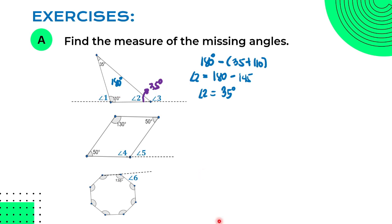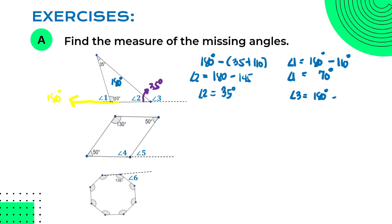Since interior and exterior angles are supplementary, given an interior angle we subtract from 180 degrees. Angle 1 equals 180 minus 110, so angle 1 measures 70 degrees. Angle 3 equals 180 minus 35, so angle 3 measures 145 degrees. This confirms that interior and exterior angles are supplementary.